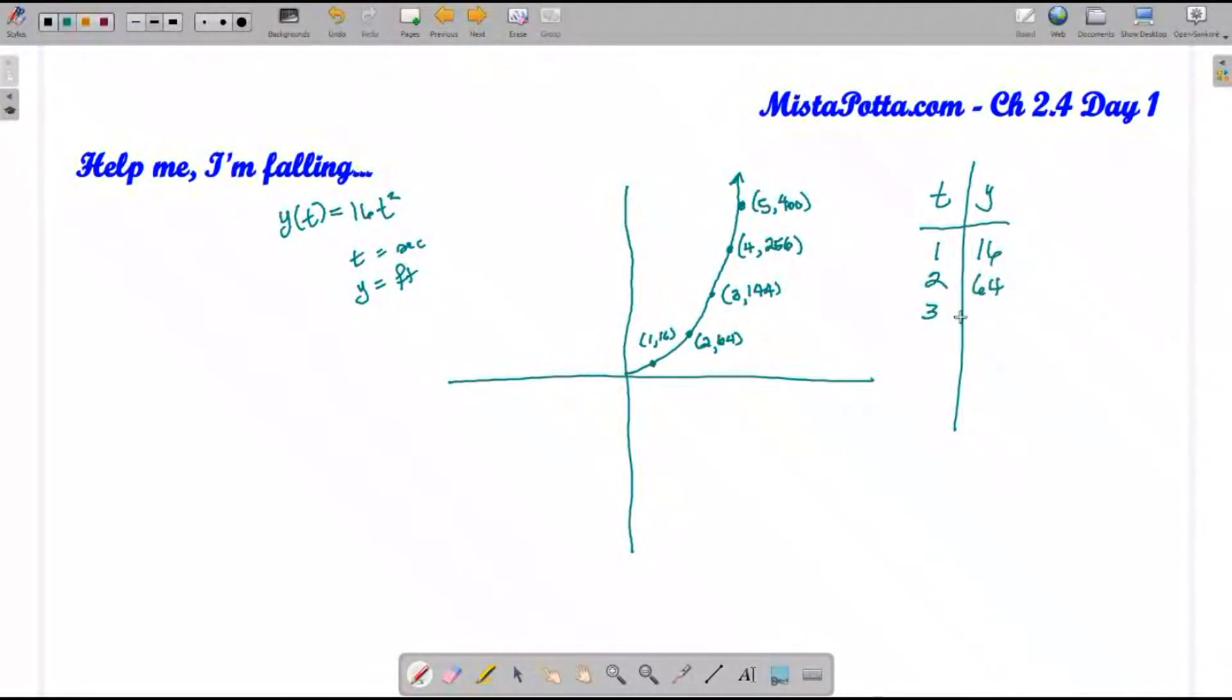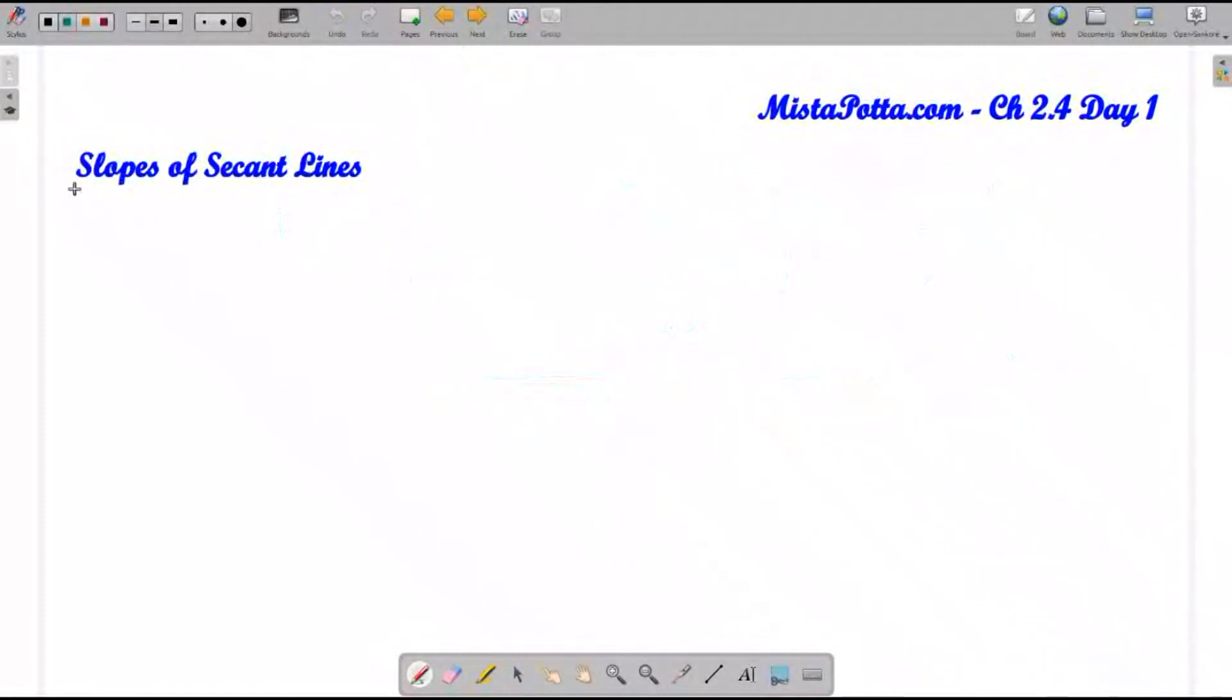I could think of this as a table as well, where I'm dealing with time and the height that I've fallen. After one second, 16 feet; after two seconds, 64, and so forth. What I want to do is take a look at these values and see if I can infer some type of justification to answer a pretty interesting question.